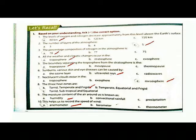Question 6: Ultraviolet rays. Question 7: Noctilucent clouds occur in the mesosphere. The three heat zones are torrid, temperate, and frigid.